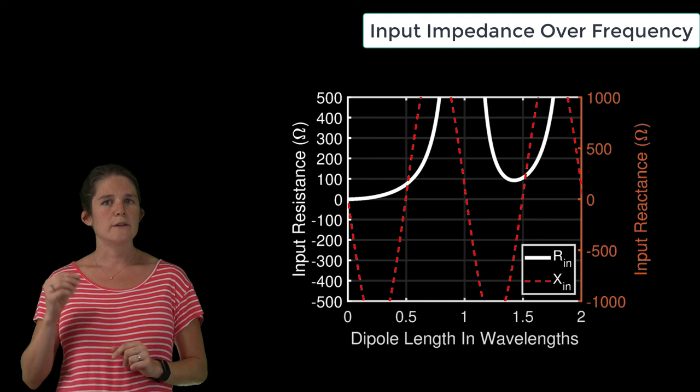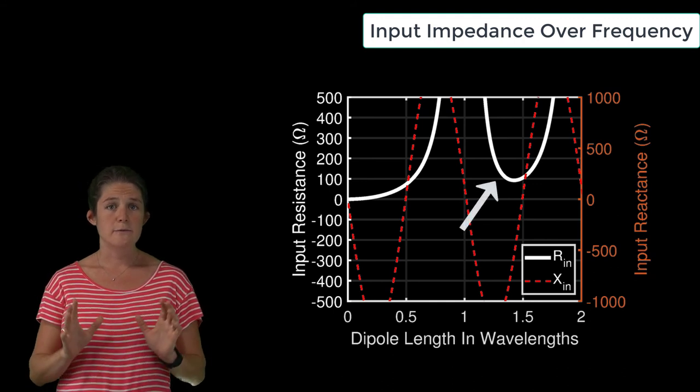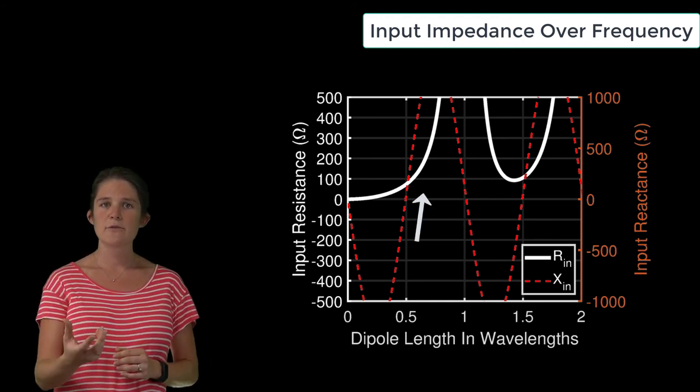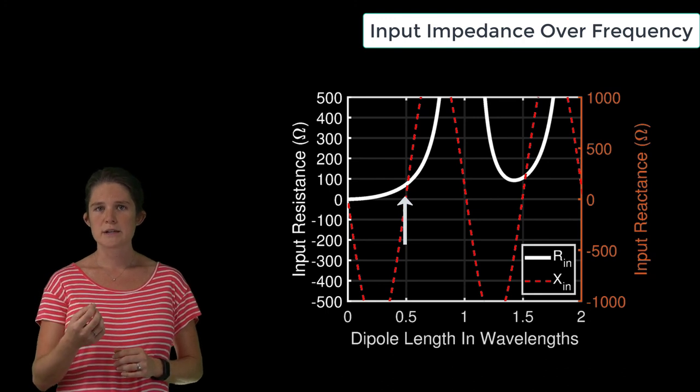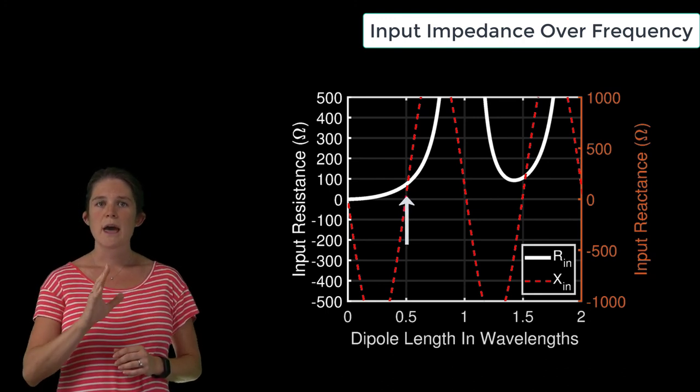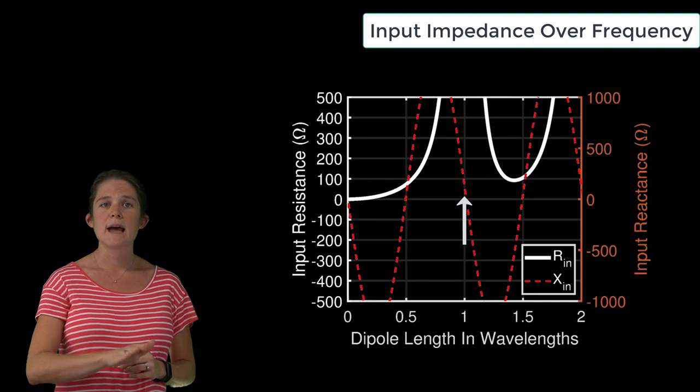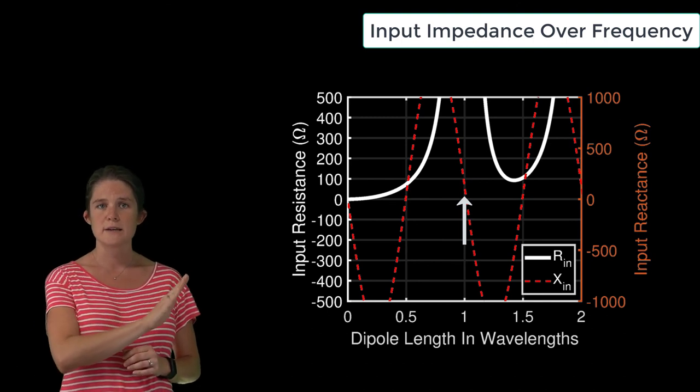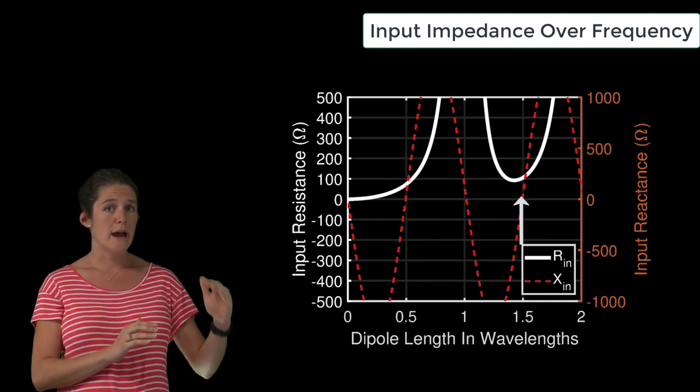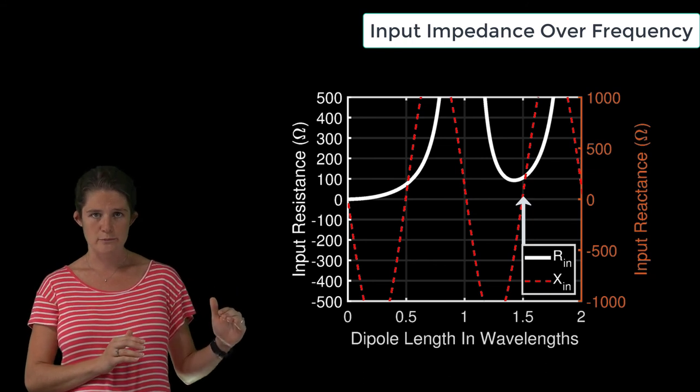Note also that the real part of the input impedance varies greatly with frequency. At the half-wavelength frequency, it's approximately 73 ohms. At a full wavelength, it hits an asymptote and veers toward positive infinity, and at the three-halves wavelength, it is approximately 104 ohms.